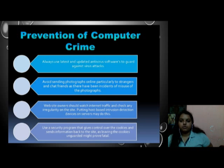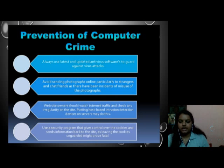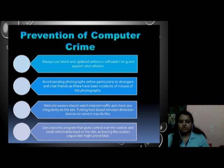How can we prevent computer crimes? Computer crimes can be prevented by using the latest and updated antivirus software to guard against viruses. Avoid sending photographs online, particularly to strangers and chat friends, as there have been incidents of misuse of photographs. Website owners should watch internet traffic and check for any irregularities on site. Putting host-based intrusion detection devices on the servers may help. Use a security program that gives control over cookies, as leaving cookies unguarded might prove fatal.